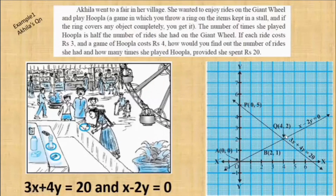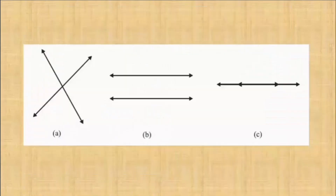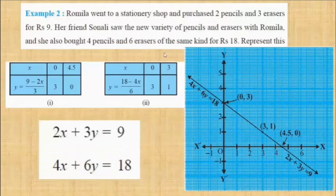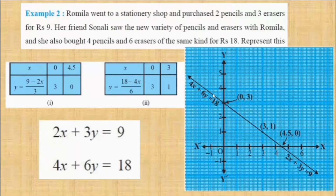There was only one solution because these graphs are consistent and they are intersecting at a single point. This is the method to solve using the substitution method. Sometimes the graph may be coinciding or parallel, so we will discuss one example each for coinciding and parallel pair of linear equations. The Romila went to a stationary shop problem — I hope you remember this. When we discussed this, this was a dependent graph, and a₁/a₂ equals b₁/b₂ equals c₁/c₂. There are infinite number of solutions in the case of dependent graphs.